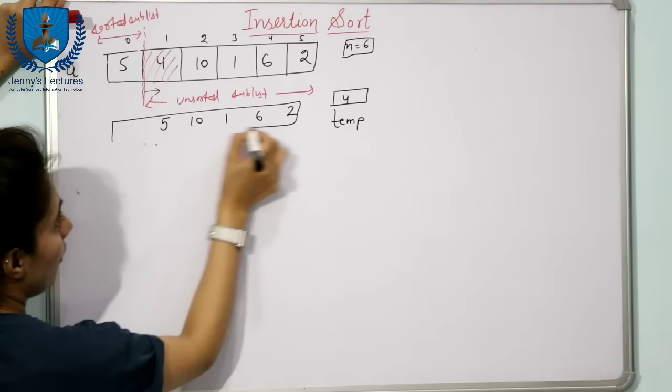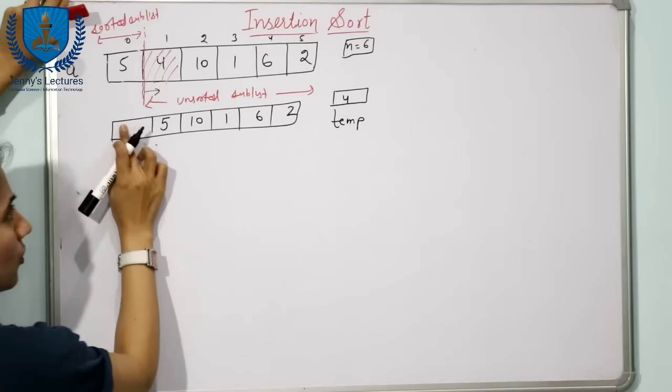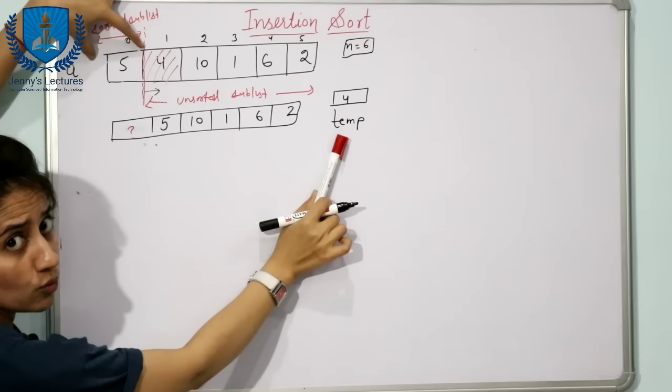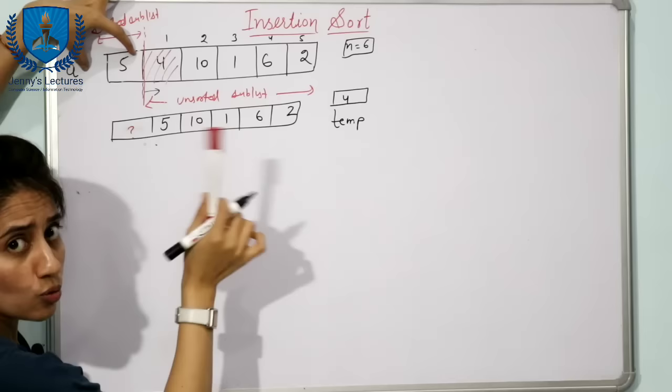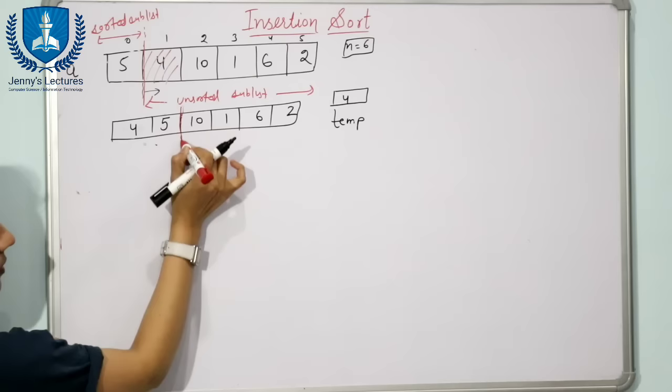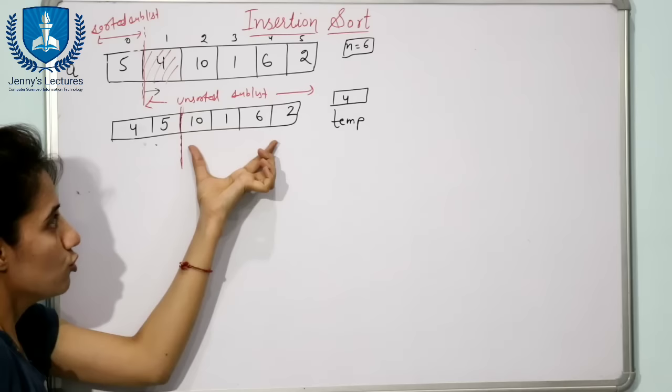Now at A[0], it's a question mark. Is there any other value in the sorted sublist to compare with? No — we have reached index 0, so there is no other value. Since there's no other value, we put 4 at this free space. Now 4 is at A[0]. The sorted sublist is now [4, 5] and the unsorted sublist is the rest.